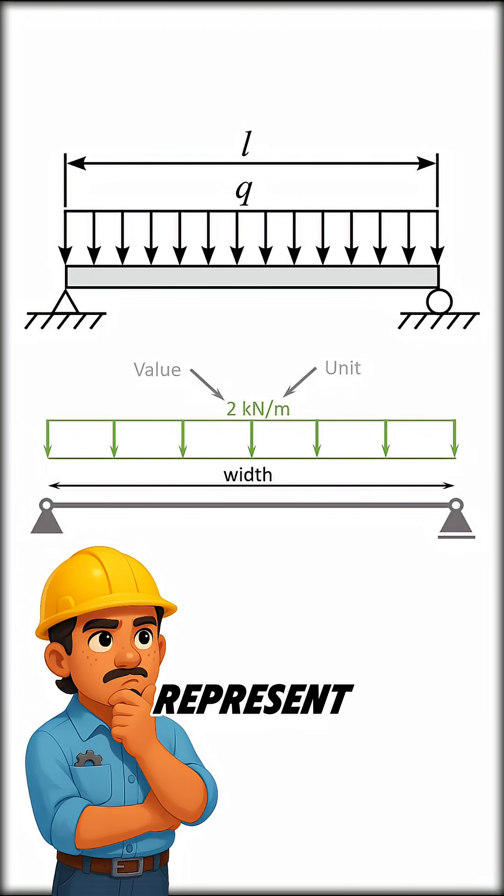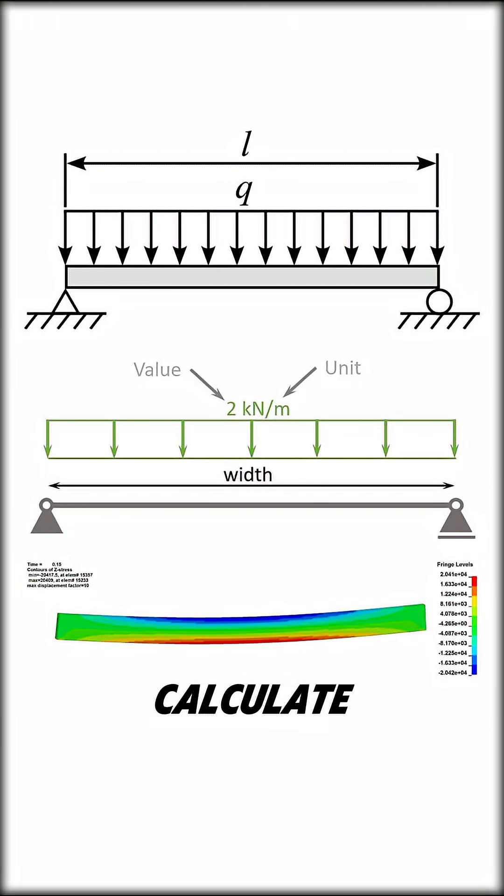In engineering, we represent these loads as force per unit length, like kilonewtons per meter. This lets us calculate how beams bend, how supports react, and how to keep the structure stable and safe.